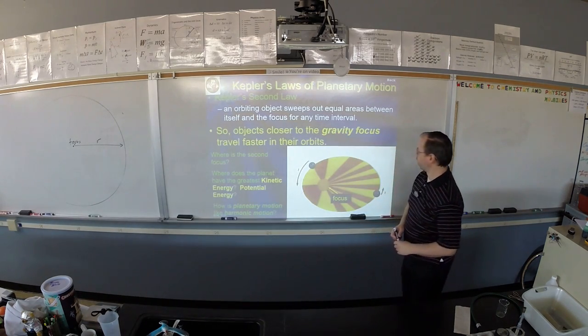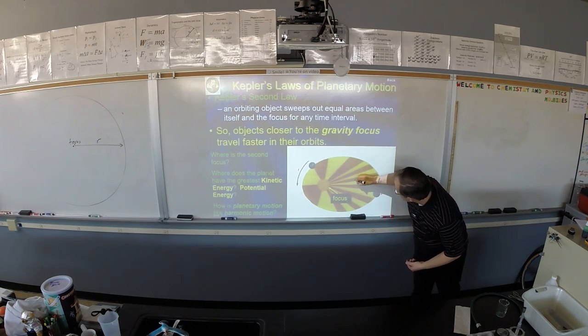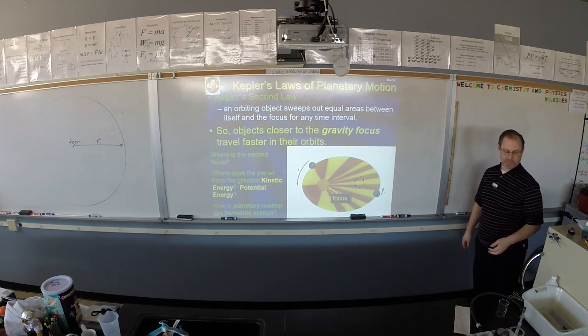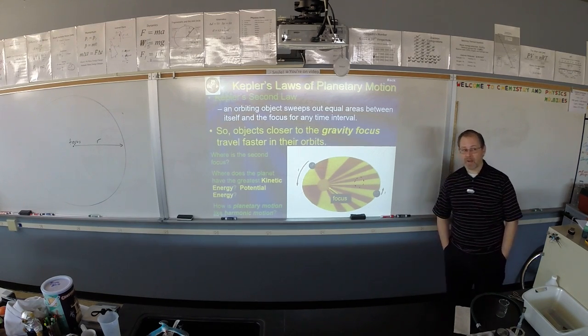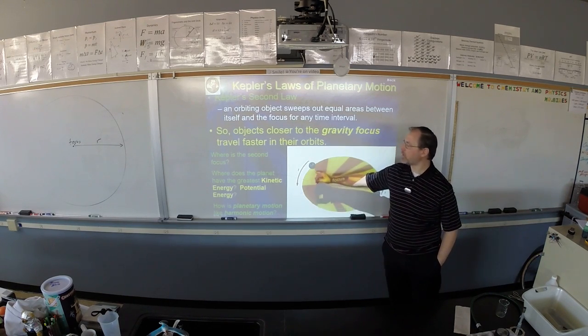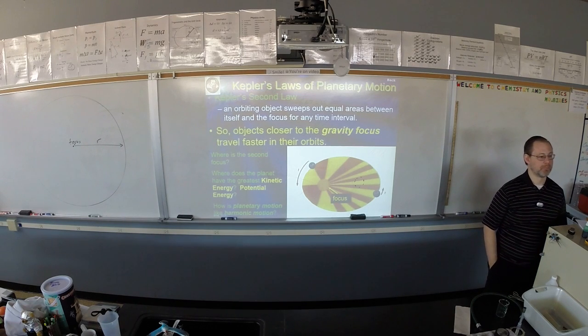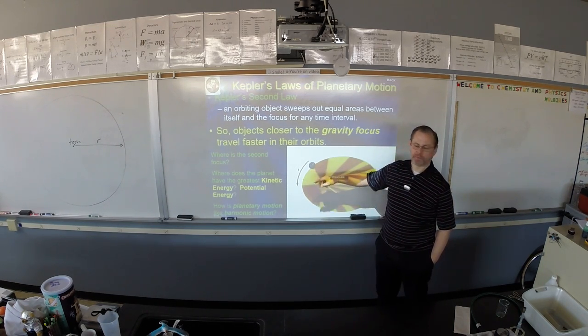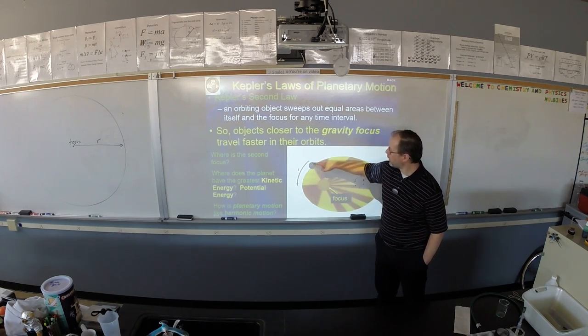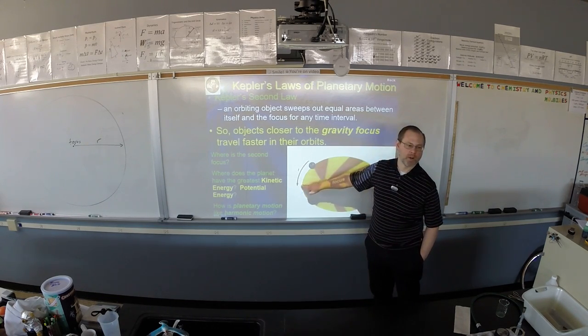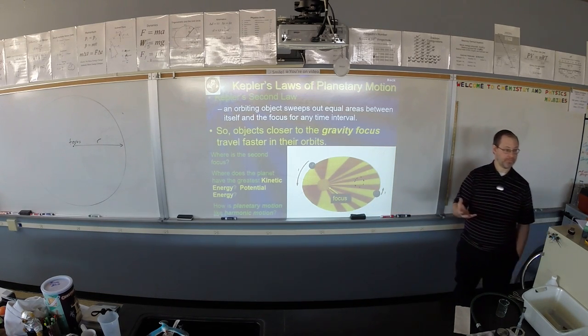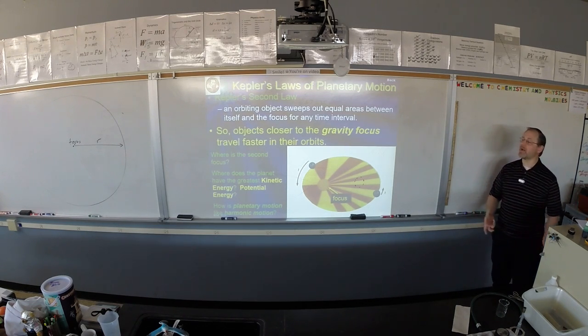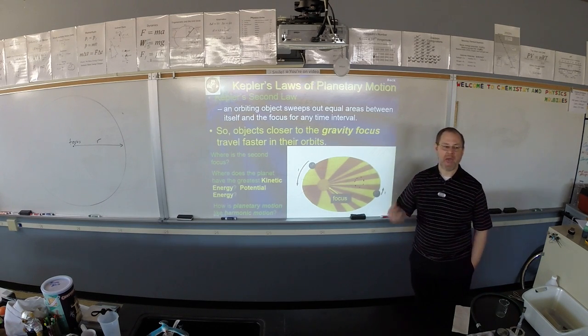So an orbiting object sweeps out equal areas between itself and the focus for any given time. From the central gravity focus, for any given time it's going to sweep out a bigger distance when it's closer to the focus. As it's moving, if you drew a triangle from the planet to the central focus, back to the planet, if you took the arc length and drew a triangle from the arc length to the central focus, back to where it was over a certain amount of time, it draws out the same area, whether it be close to the focus or further away. So for any given time interval, it draws out the same area.